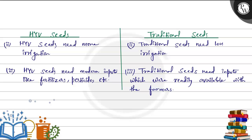Point No.3: HYV seeds need moderate inputs like fertilizers, pesticides, etc. Traditional seeds need inputs which were readily available with the farmers.